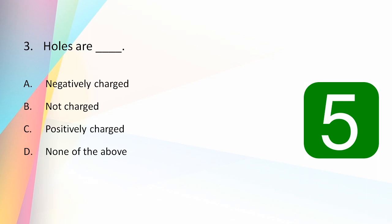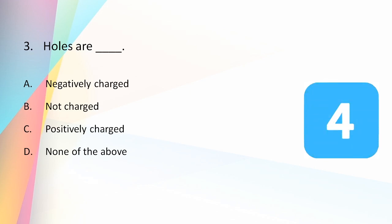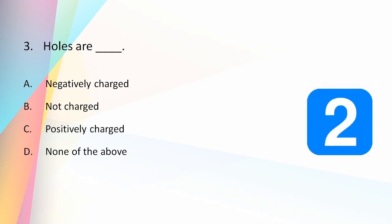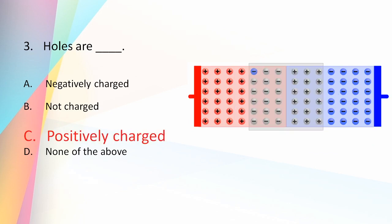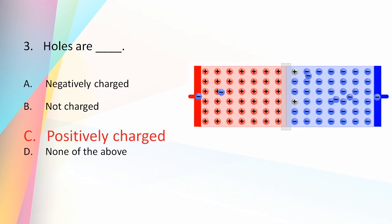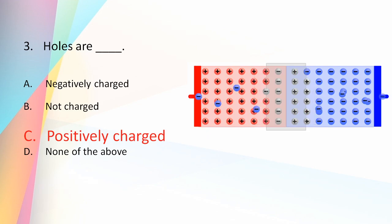Holes are positively charged, while electrons are negatively charged. The deficiency of one electron is considered as a hole or positive charge.